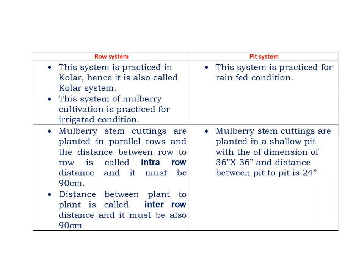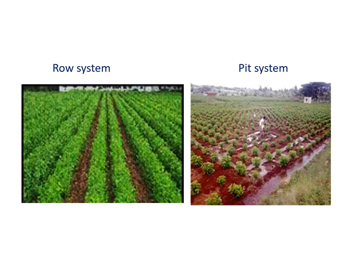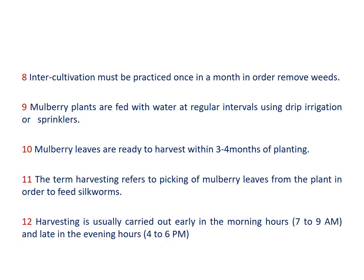The pit system is practiced for rainfed conditions. Mulberry stem cuttings are planted in a shallow pit with dimensions of 36 inches by 36 inches, and the distance between pit to pit is 24 inches. This slide depicts the photographs of the row system and pit system of mulberry cultivation. Inter-cultivation must be practiced once a month to remove weeds.